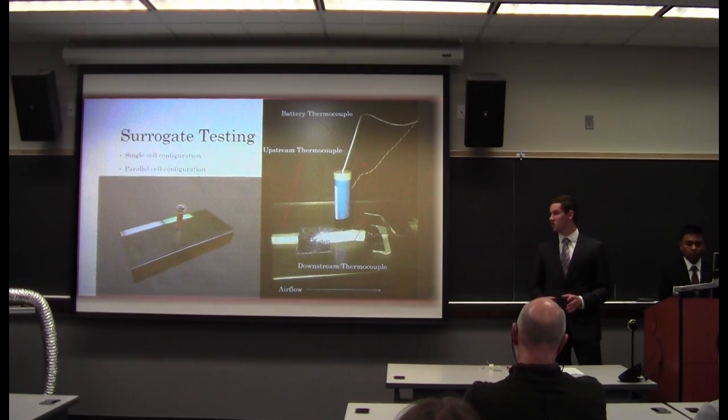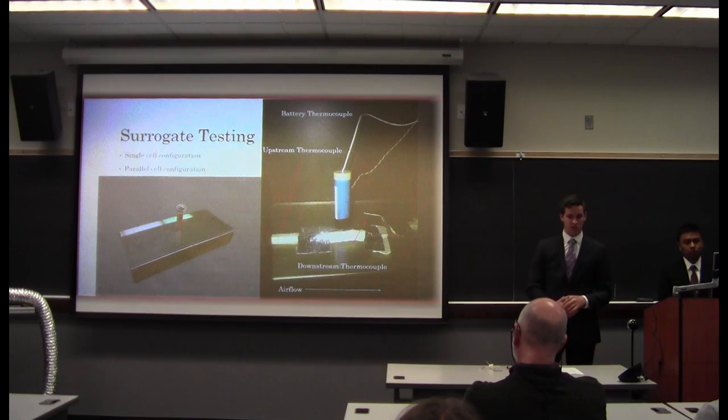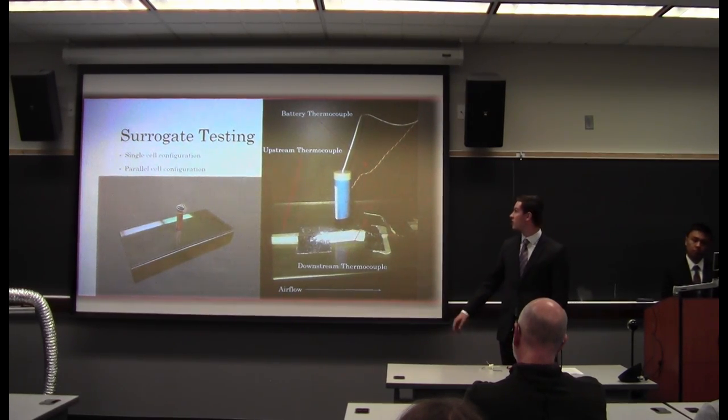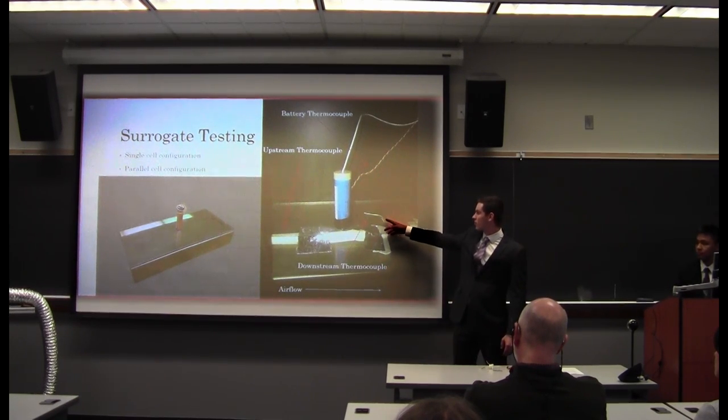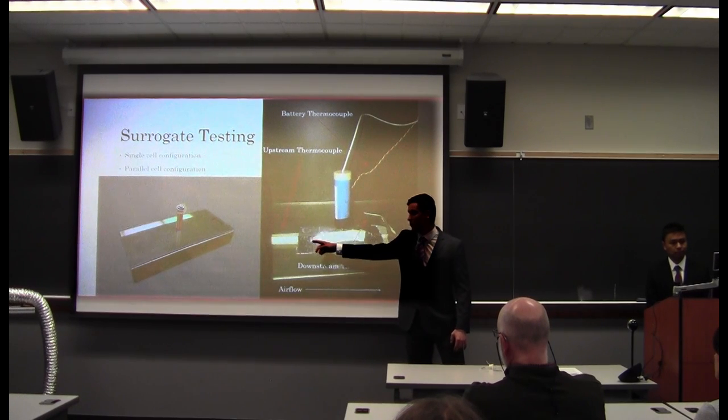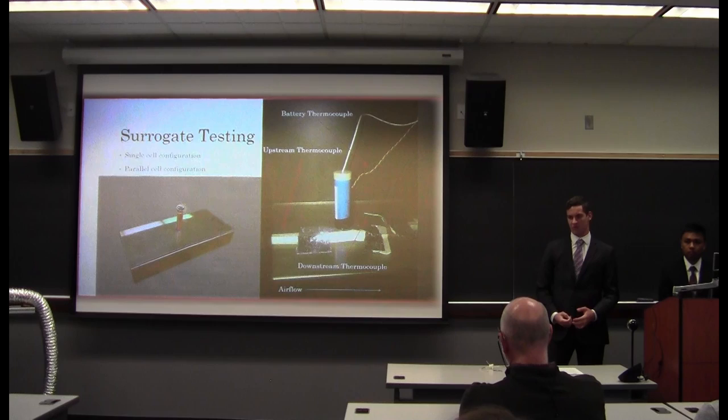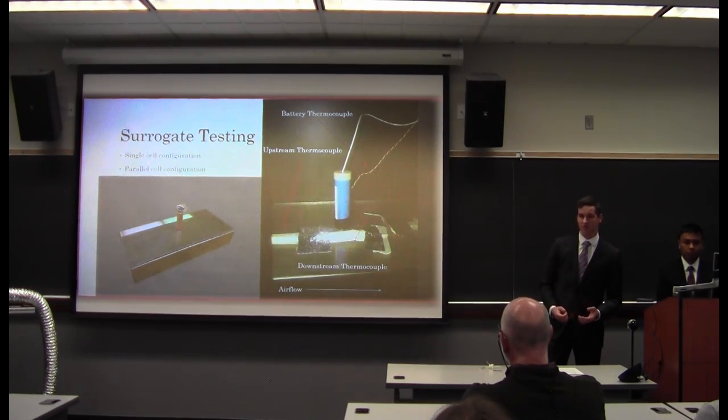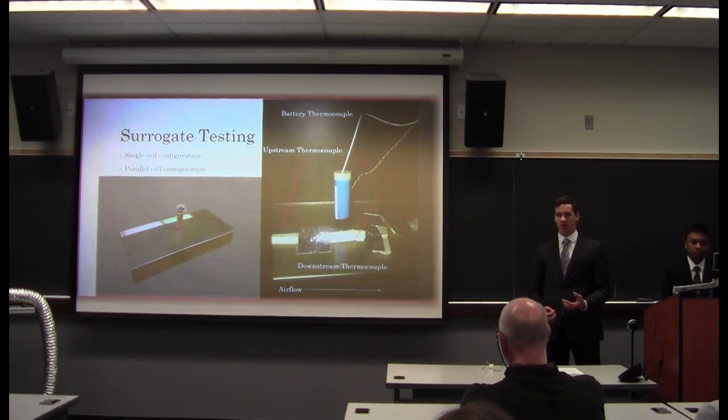We used two different configurations in our testing, the first of which is a single cell configuration, which are the ones shown here. A single cell uses one surrogate or battery. In addition, it uses four thermocouples. One of them is placed directly on the battery, as seen up here. One of them is placed downstream of the battery, right here. And one of them is placed upstream of the battery, in the airflow. The fourth thermocouple is just for ambient air temperature to give us a reference point. Using the data we collected from these, we were able to analyze the best places to put the thermocouples to capture that temperature data.